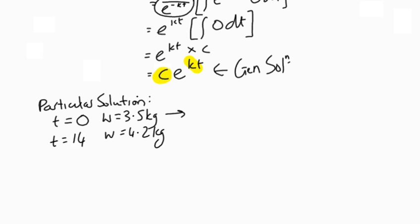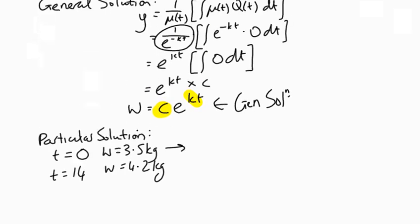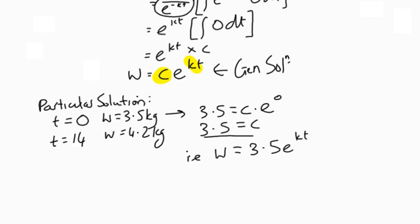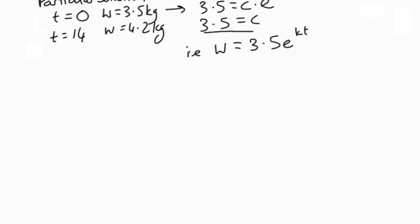We've got two sets of information. If we take the first set, we can say that, yeah I'm gonna change w. We're dealing with w in this context. So 3.5 equals c times e to the power k times zero, which is going to be zero, which means that 3.5 equals c.